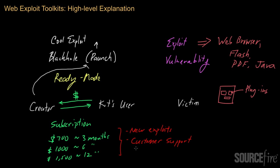There are actually multiple tiers of support. Some toolkit authors are fairly brazen — they put a phone number you can call for customer service. Some actually provide live customer support, which is typically done via instant messaging applications like Jabber or even ICQ.